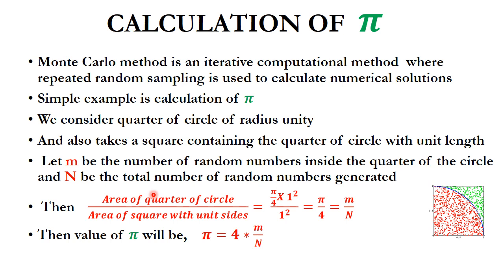The area of the quarter circle divided by the area of the unit square equals pi*r²/4 divided by 1², which simplifies to pi/4. This ratio equals m/N (points inside the circle over total points), so pi is calculated as 4*m/N.